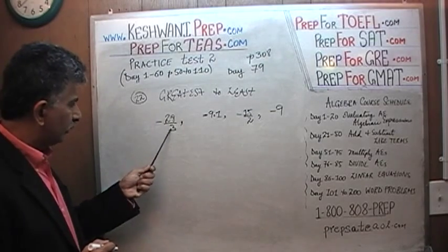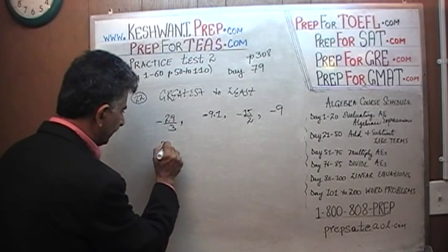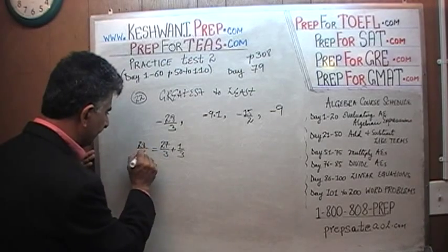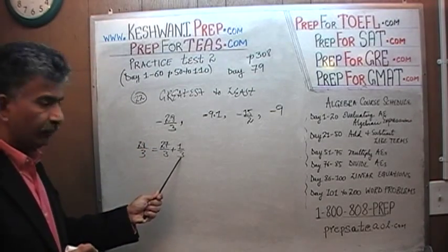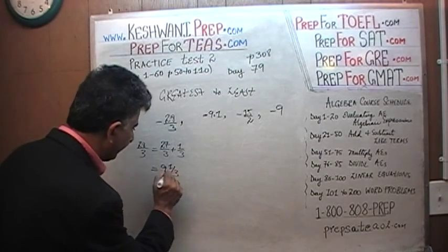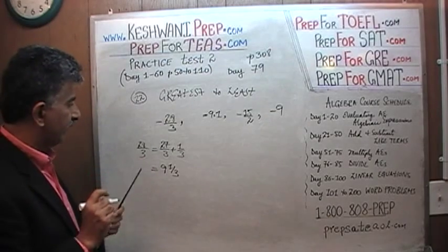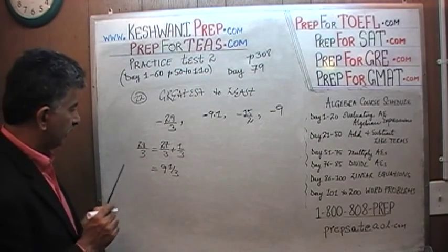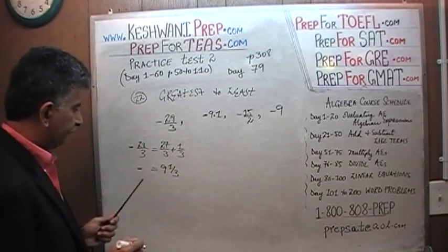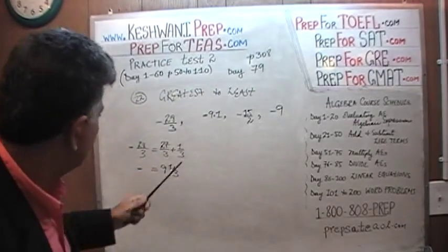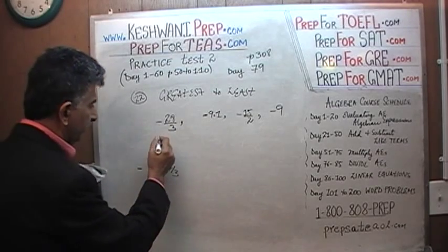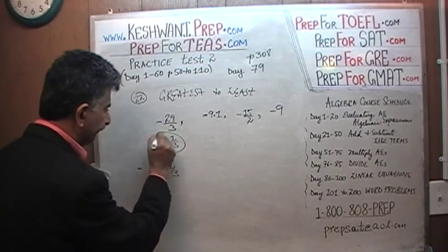28 over 3 can be written as 27 over 3 plus 1 over 3. 27 divided by 3 is 9, so it's 9 and one-third. But remember, the whole thing is negative — so this quantity is negative 9 and one-third.